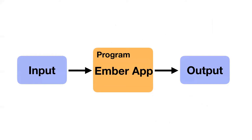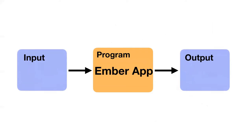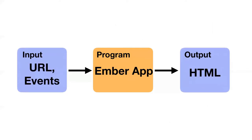I would say an Ember app starts with the input of a URL — that's what's going to tell it how to start. From that point forward, it's going to handle a stream of events from the user as its input, and your output is HTML. The HTML is really DOM done directly, but that's really just a performance thing, and understanding HTML is a great way to think about an Ember app.